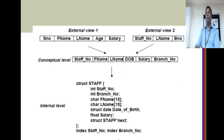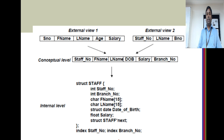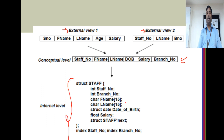Another way to understand three schema architecture: the conceptual level is the base, and we build views on top of it — that becomes the external level. When you talk about the internal level, it is all about data structures, indexes, and how it is organized.